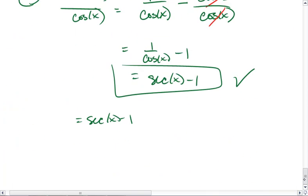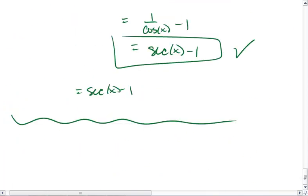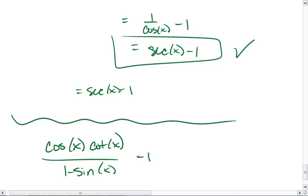If you really want an extra practice problem just for fun, you could also try this one. Look at cosine x, cotangent x, all over 1 minus sine x minus 1, and we want to show that this is equal to cosecant x.